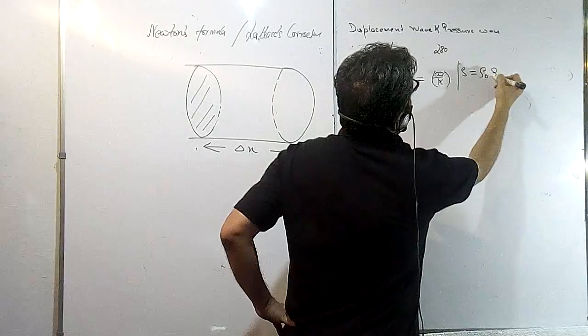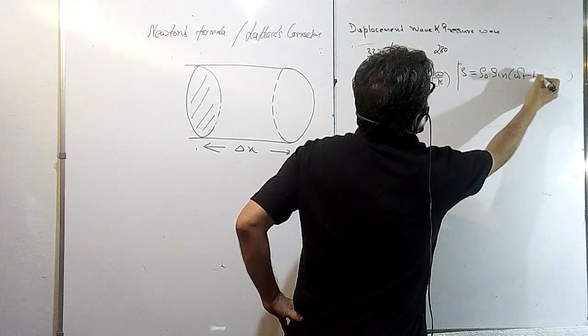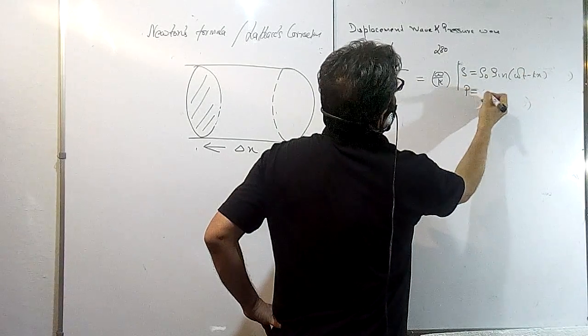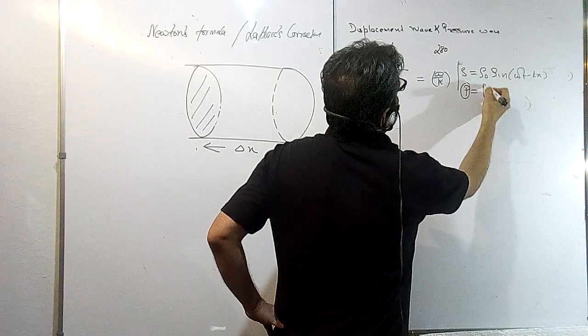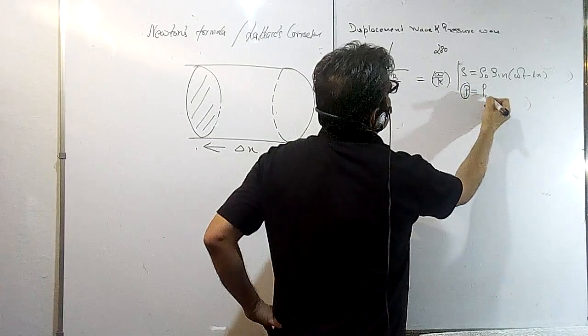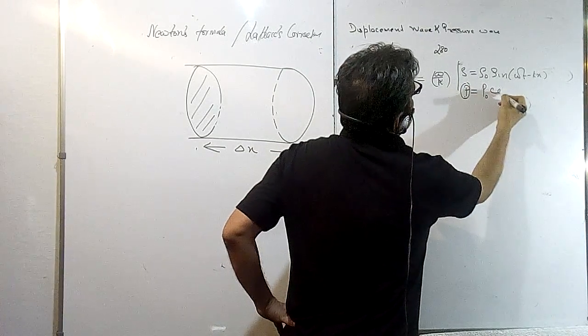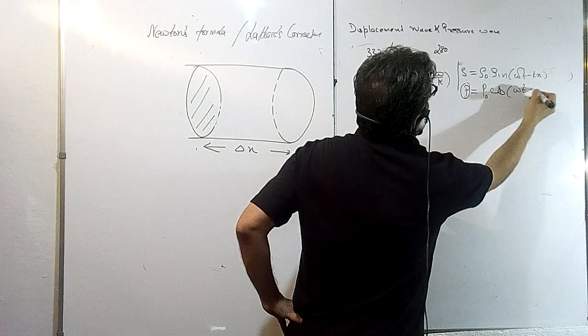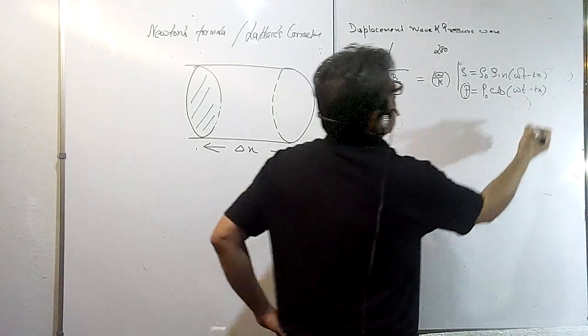We have seen in the previous lecture that displacement at any point is shown as sine(ωt - kx), and pressure variation—this is pressure variation, not pressure—this maximum pressure variation is written as cos(ωt - kx).